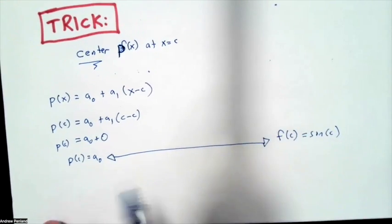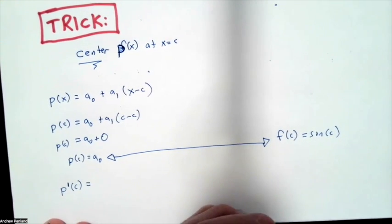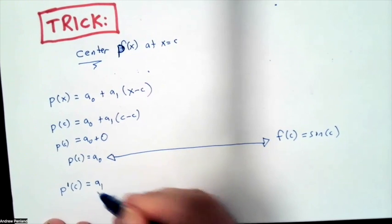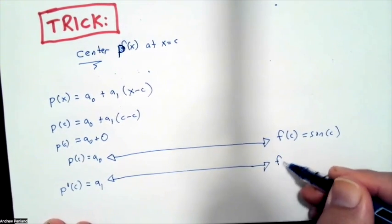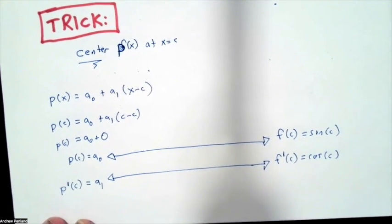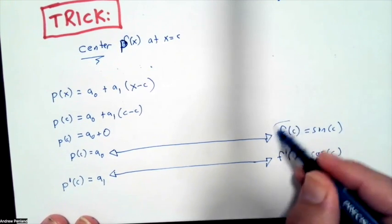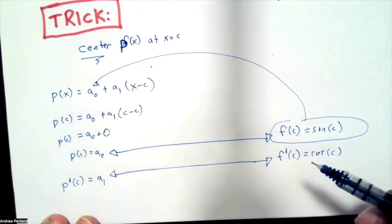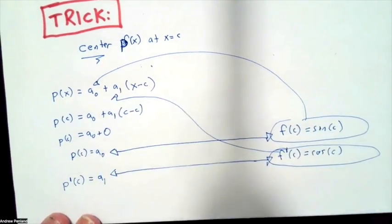Because now if I go to evaluate f of c, I see that that first coefficient a sub zero has to be sine of c. And similarly, that second coefficient a sub one, that comes from evaluating the derivative, must line up with cosine of c. So I have this correspondence between sine of c being a sub zero and cosine of c being a sub one.